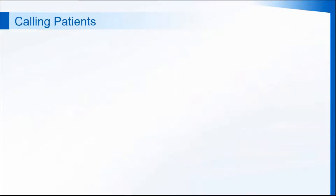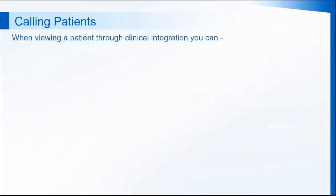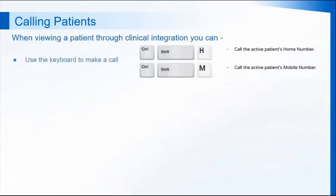When calling patients, if you're in the practice with the integration software running in the background, you can call a patient directly from the clinical record. With the patient active on the screen in front of you, you can use your keyboard to make the call by pressing Ctrl, Shift and H to dial their home number, or Ctrl, Shift and M to dial the patient's mobile number. This works like click-to-call, so will call your desk phone. When you answer your desk phone, it will then connect you to the patient's number on whichever number you've requested.